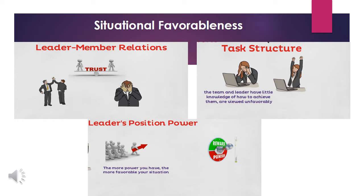Situational favorableness depends on three distinct factors: leader-member relationship, task structure, and the leader's position power. Leader-member relationship refers to the level of trust and confidence the team gives the leader — a most trusted leader has more influence and a more favorable situation. Task structure refers to whether tasks are clearly defined and structured or unstructured, where the team and leader have little knowledge of how to achieve them. Leader's position power is the amount of power you have to direct the group and provide reward or punishment. Fiedler identified power as either strong or weak.